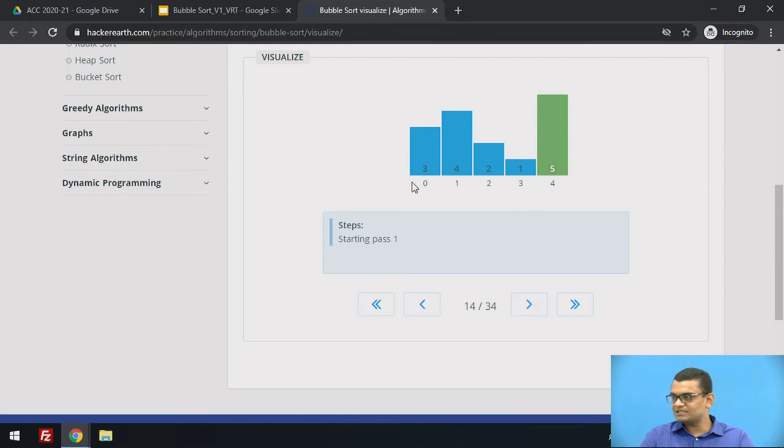We reduce the size of the subproblem by 1 and now we look at the elements from index 0 to 3. 3 and 4 are compared and since they are in order, they are not swapped. 4 and 2 are compared and they will be swapped. Next, 4 and 1 are compared and since they are not in order, they will be swapped. And here we see that 4 has been finally put in its final position.